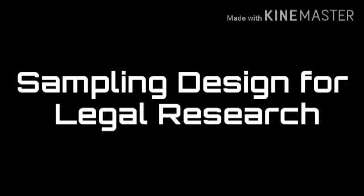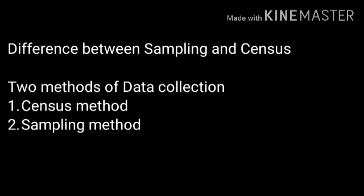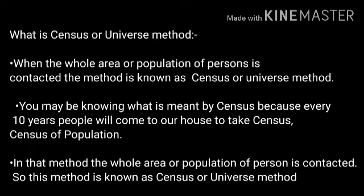Today we are going to discuss sampling design for legal research. Sampling and census are two different methods for legal research. The primary purpose of legal research is to discover principles that have universal application. For this, data has to be collected and analyzed. There are two methods of data collection: the census method and the sampling method.